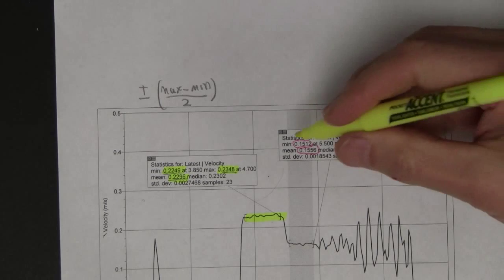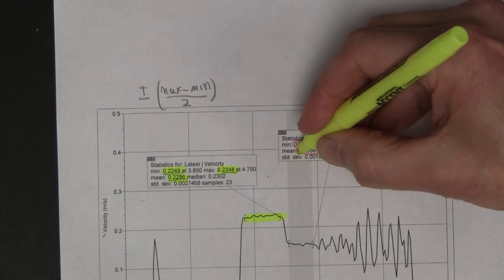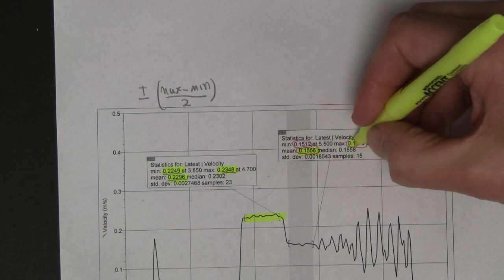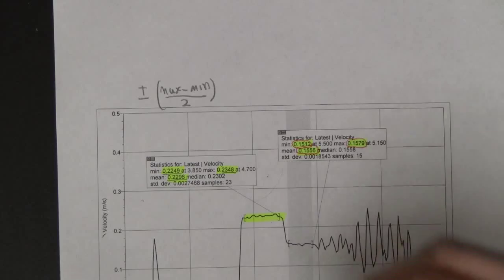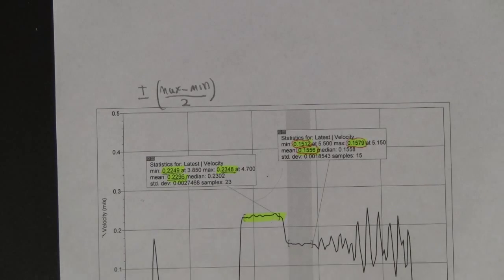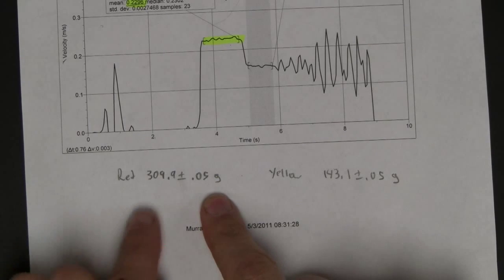And then here is afterwards. Here is the mean velocity. Here's the max and the min. And again, we're going to go max minus min over 2 to get the uncertainty for that. And then you will also need to have found the mass of those things.